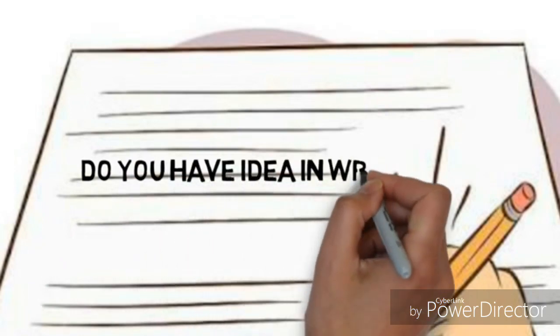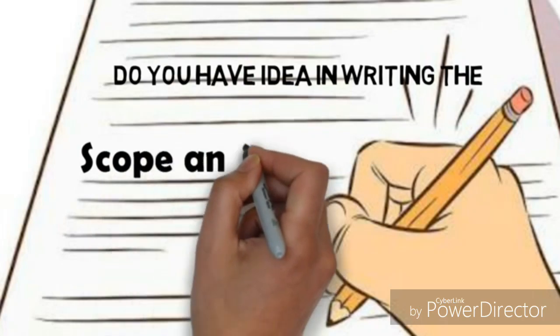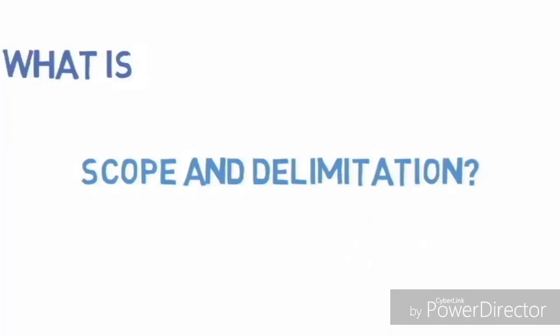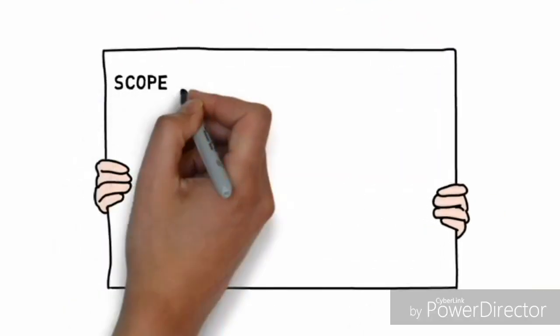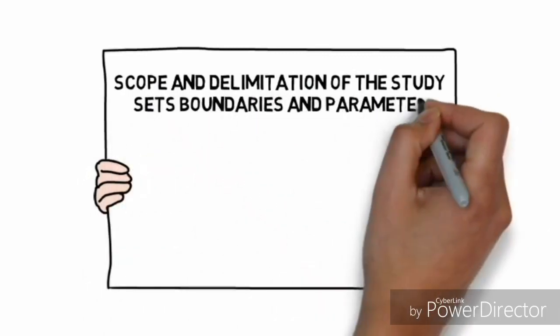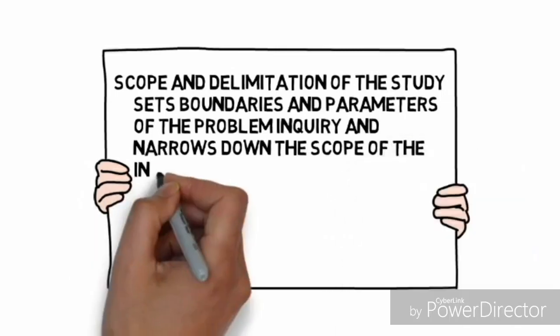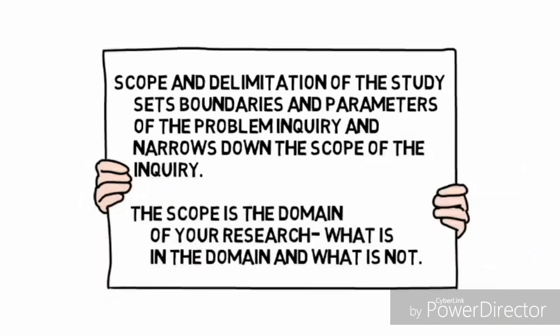Do you have an idea in writing the scope and delimitation? So what is scope and delimitation? Scope and delimitation of the study sets boundaries and parameters of the problem inquiry and narrows down the scope of the inquiry. The scope is the domain of your research, what is in the domain and what is not.